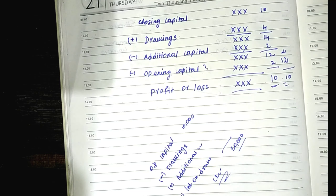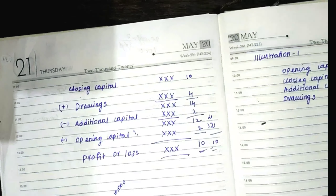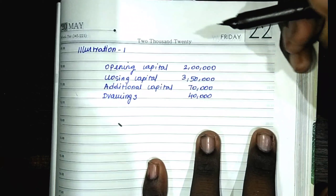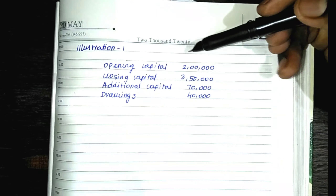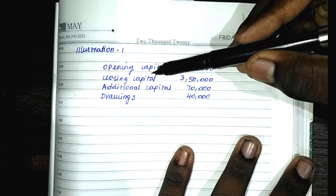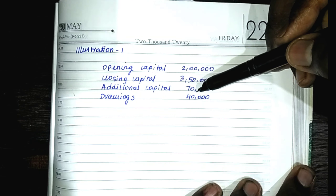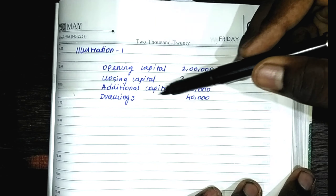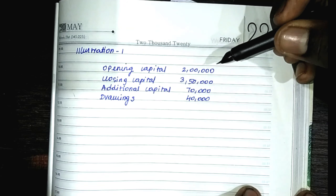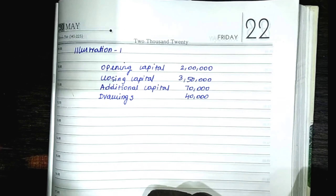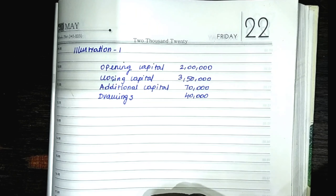Let's look at Illustration 1. The opening capital is 2 lakhs, closing capital is 3 lakhs, additional capital is 70,000, and drawings is 40,000. Now let's calculate profit and loss.